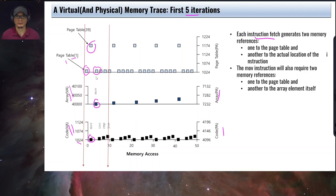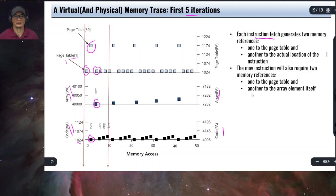This is the end of this chapter. In the next chapter, we're going to learn how to speed up the process by introducing a cache called the translation lookaside buffer, or TLB.